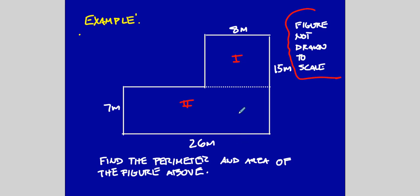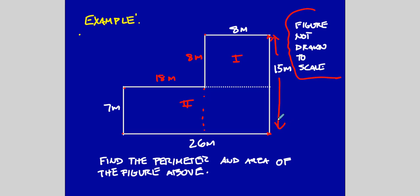Going across: this is 8 and this is 26. So this missing horizontal distance has to be 26 minus 8, which is 18 meters. Going up and down: from the floor to the top is 15, and from here to here is 7, so this remaining piece has to be 8 meters, because 7 plus 8 equals 15 meters. Now I have all the dimensions I need.